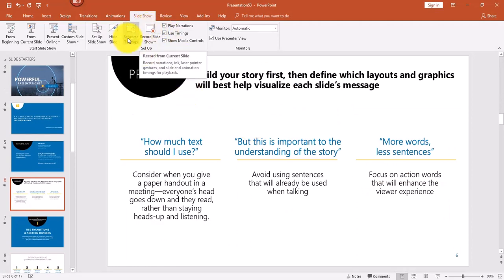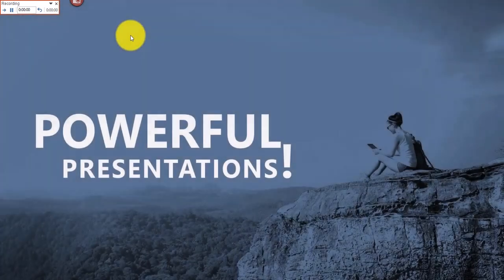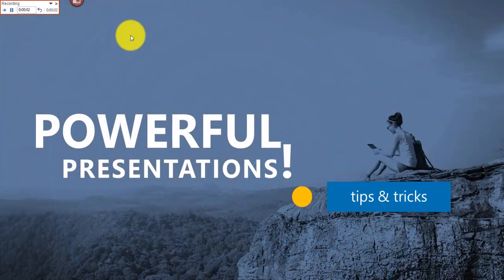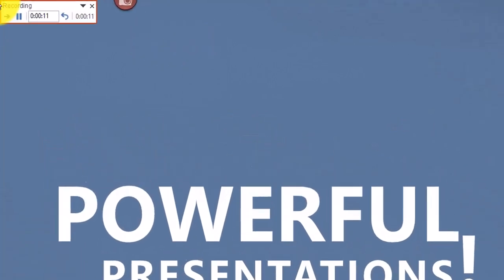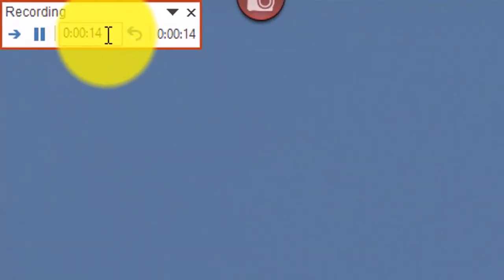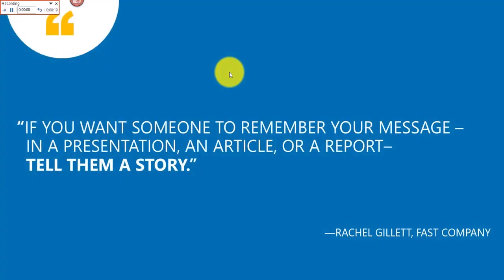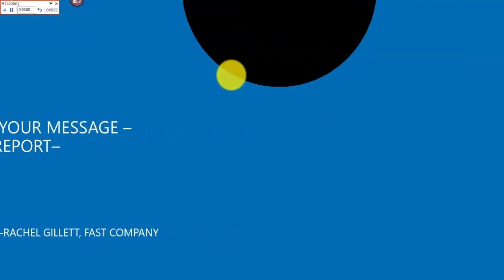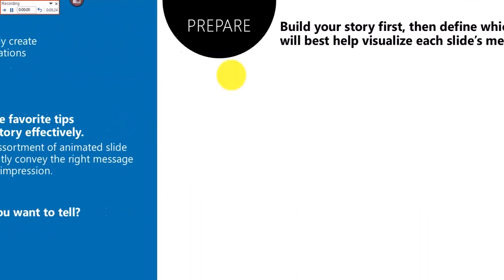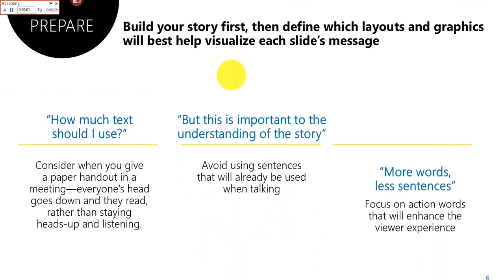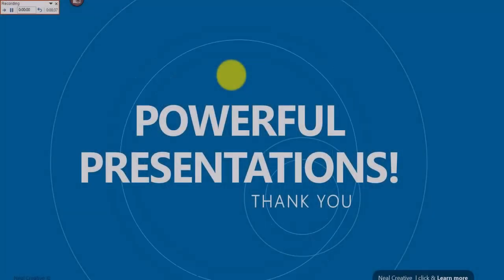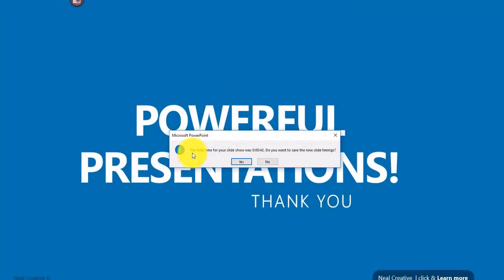Next I'll show you how to set up an automatic slideshow using Rehearse Timings from the Slideshow tab. When you click it, the slideshow starts and you practice your presentation. Notice in the upper left it's recording the timings — not your voice, just the timings. You continue slide by slide at your natural pace. I'll speed through to the last slide now.